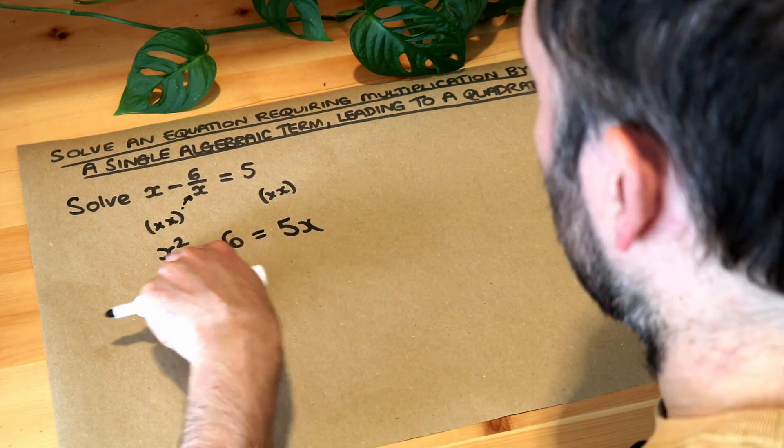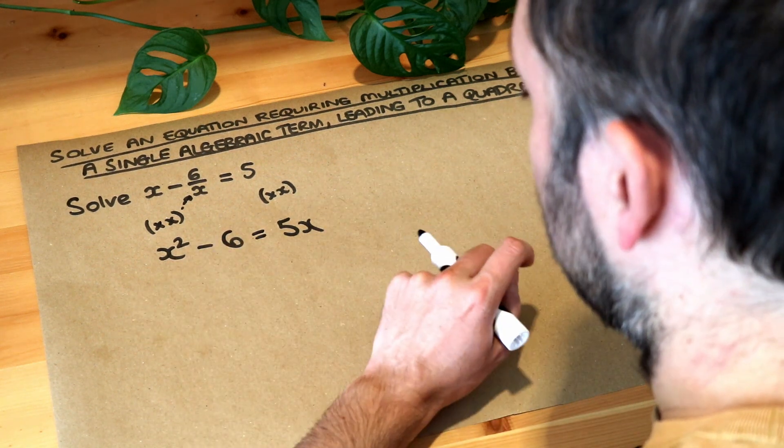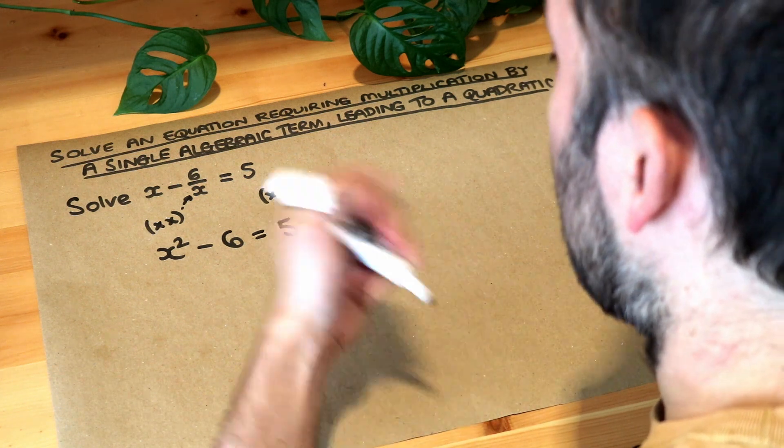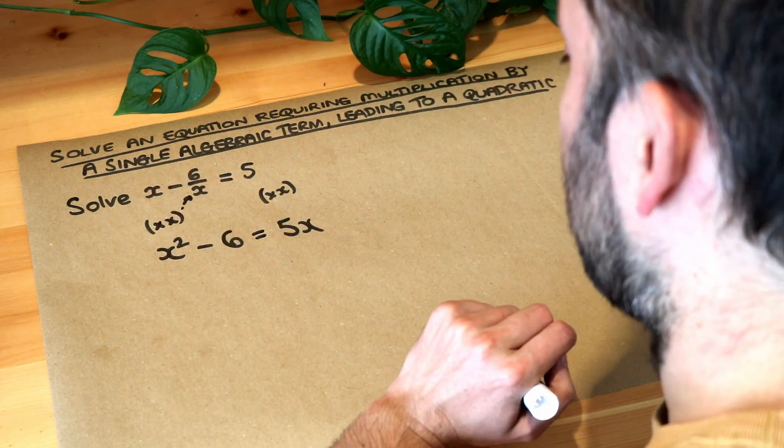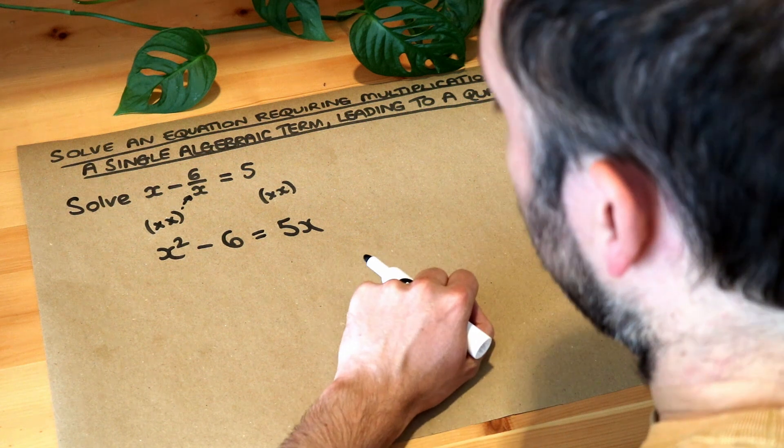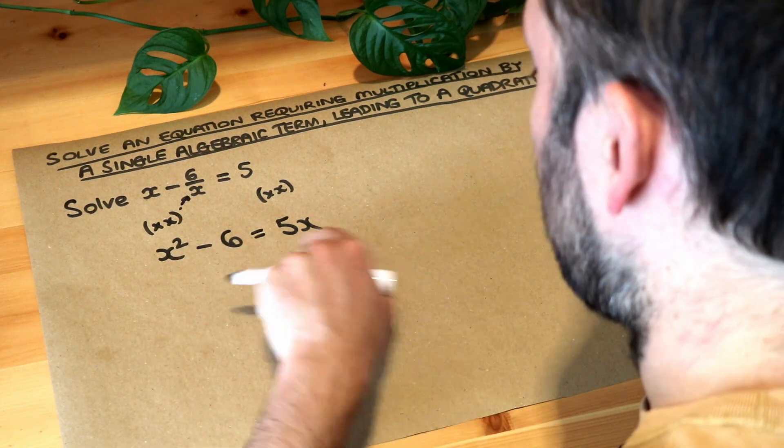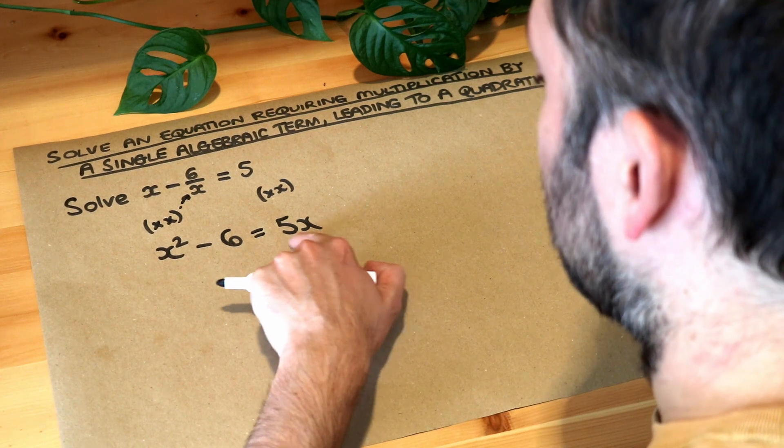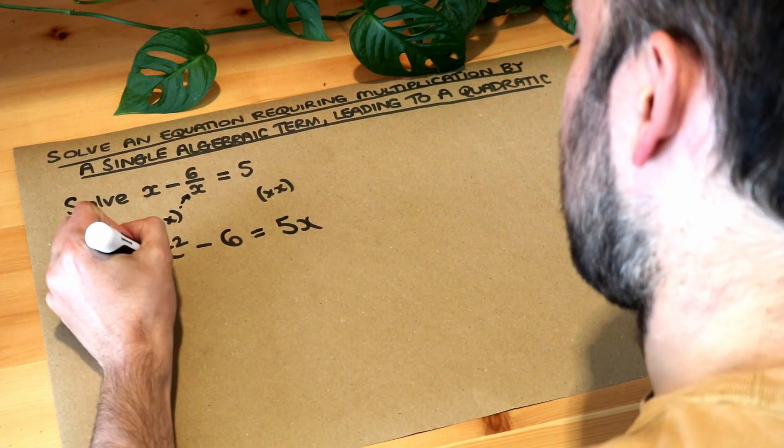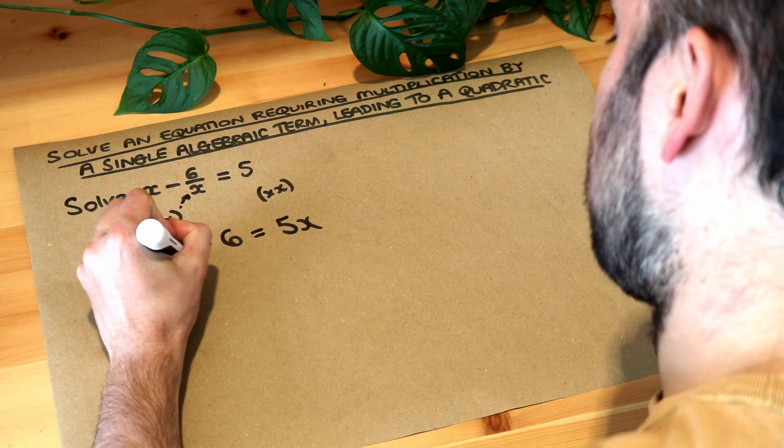Now what we usually do if we've got this quadratic equation and we're trying to solve it, we'd usually get everything on one side and zero on the other side. So let's put everything on the side where the x squared term is positive, which is the left side. We want zero on the other side of the equation, so we need to get rid of that 5x, so I'm going to subtract 5x from both sides of the equation.